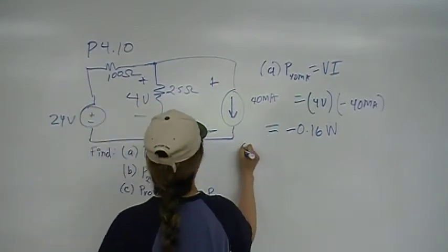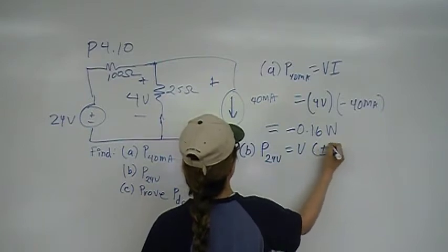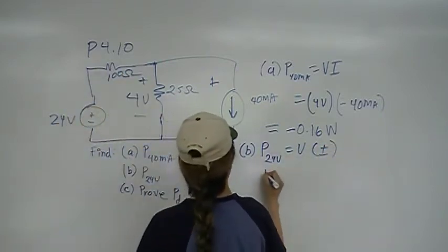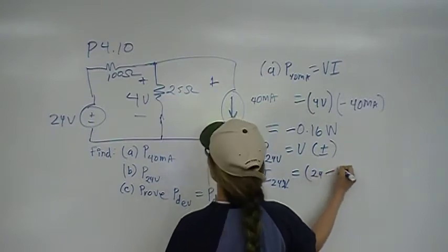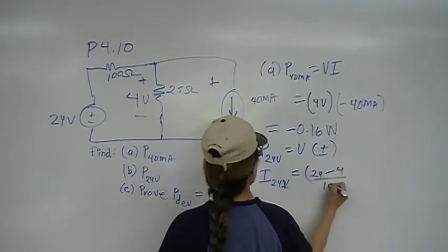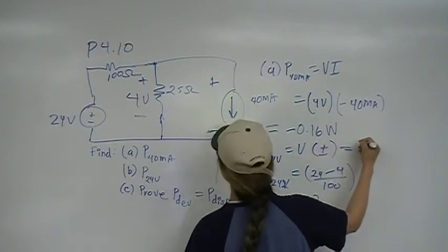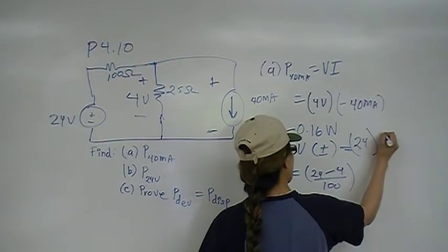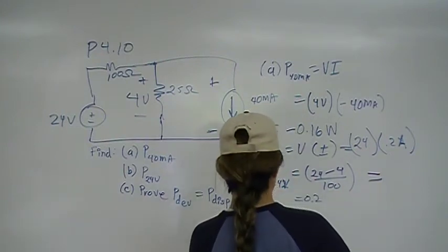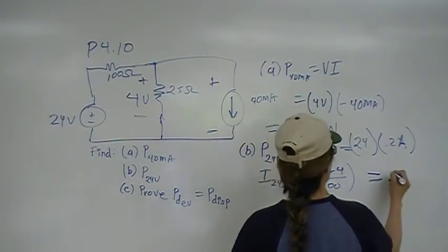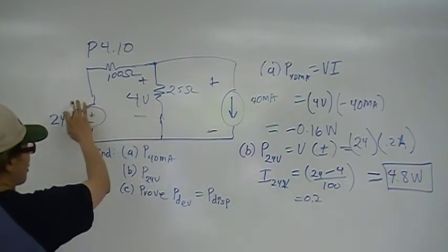Over here, we have, in part B, we have V of 24 volts is going to be VI. And what is I leaving that? The I of the 24 volt source is going to be 24 minus 4 over 100, which is 20 over 100, which is 0.2 amps. So, this is going to be V is 24 volts times 0.2 amps. 24 times 0.2 will give you 4.8 watts.